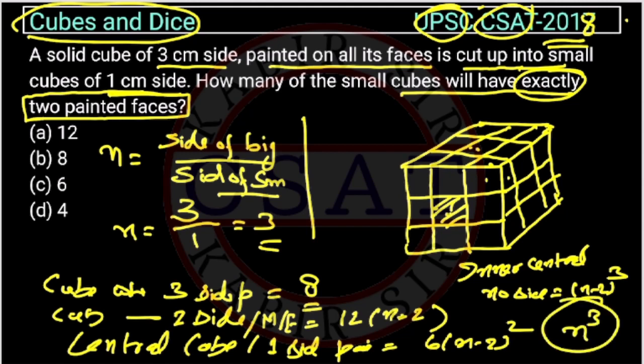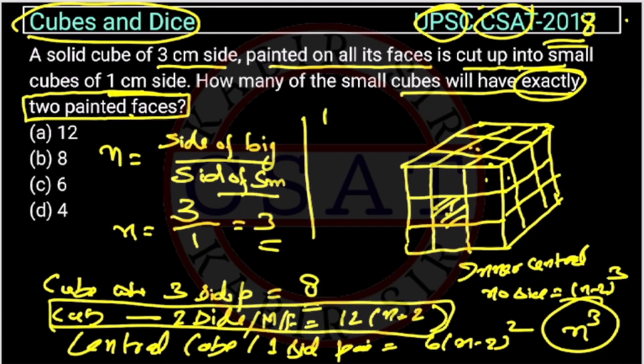Here the question is asking 2-sided painted, so we will use this formula. So this is 12 times n is 3 minus 2, so this will be 12 into 1, so this will be 12. So the answer is option A.